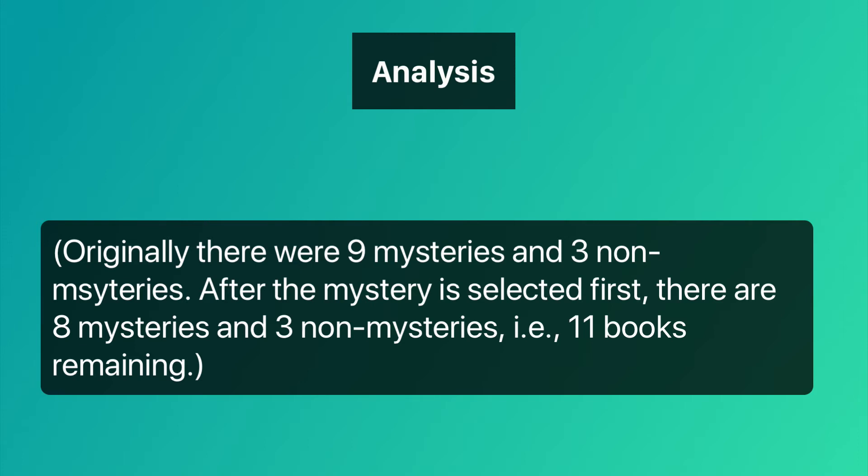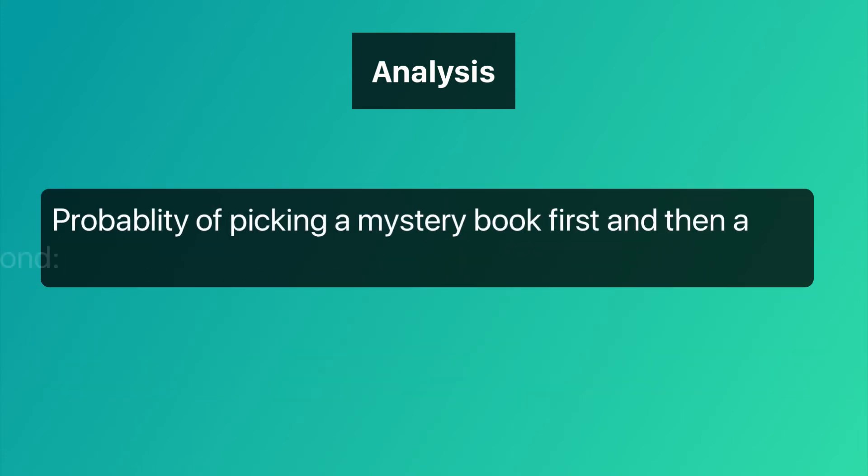After the first mystery is selected, there are eight mysteries and three non-mysteries remaining — that is, eleven books remaining. So the probability of picking a mystery book first and then a non-mystery book second is 3/4 multiplied by 3/11.